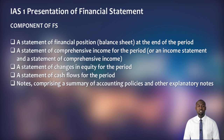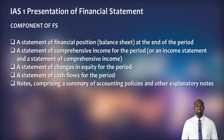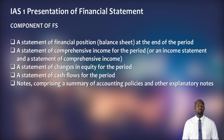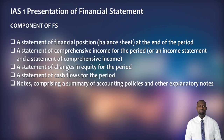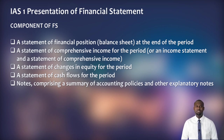Moving on to the components of a general purpose financial statement. The standard says that if you are preparing a general purpose financial statement, you must ensure it contains the following: number one, a statement of financial position — which we used to call the balance sheet; number two, a statement of profit and loss and other comprehensive income; then the statement of changes in equity for the period; a statement of cash flows for the period; and notes to the financial statement comprising a summary of accounting policies and other explanatory notes relevant to users.